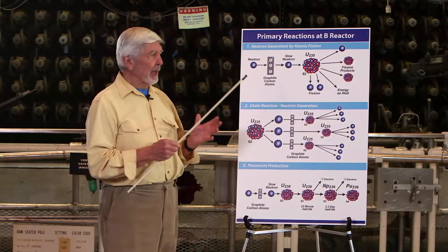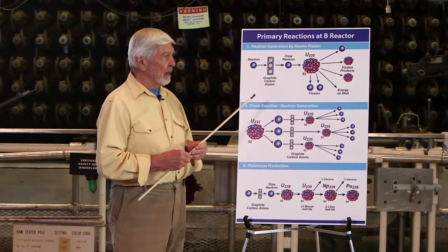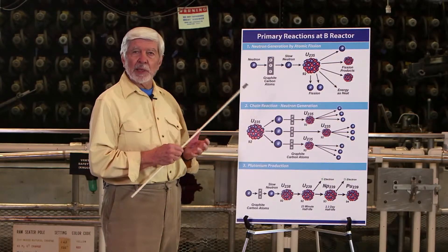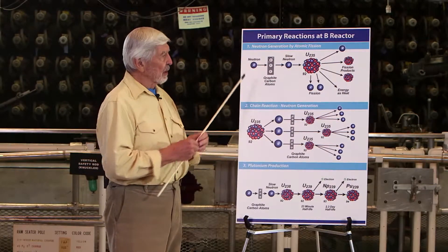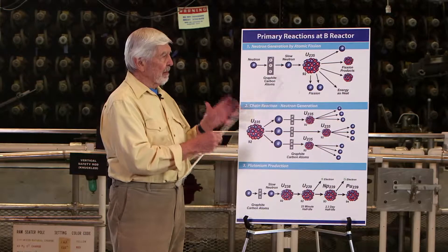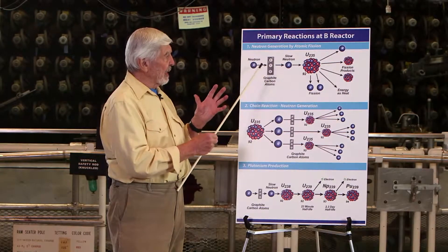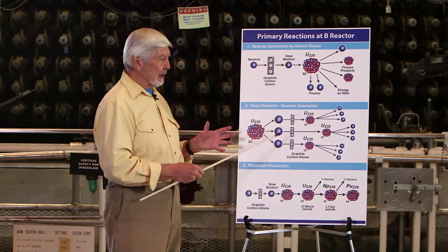Physicists talk about time in tiny fractions of seconds: microseconds, which are a millionth of a second, or nanoseconds, which are a billionth of a second. So a lot of things happen very fast in the fission reaction and the resulting chain reaction.